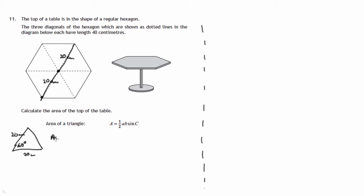So the area of triangle is one half of, in this case, 20 times 20 times the sine of the angle in between them, which we know is 60 because it's an equilateral triangle.